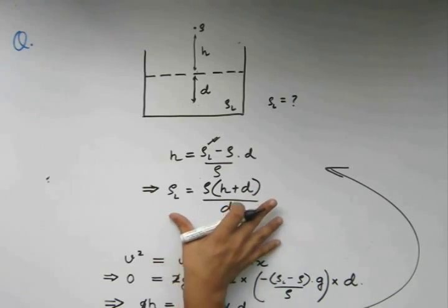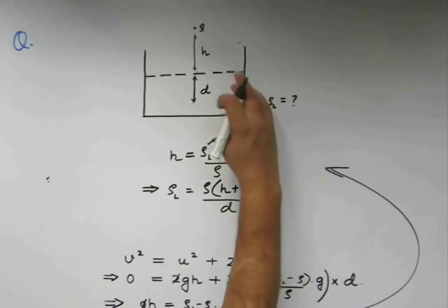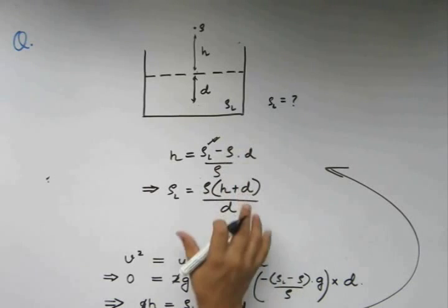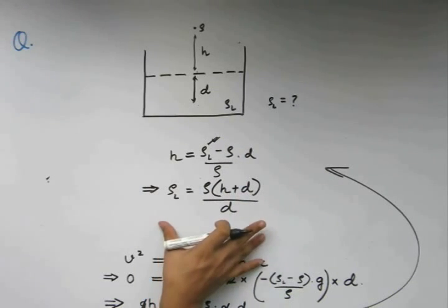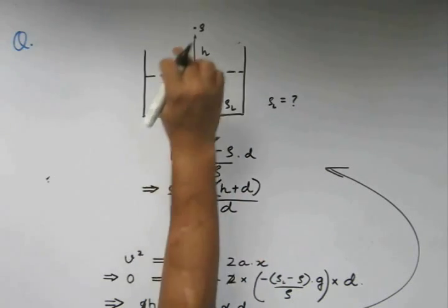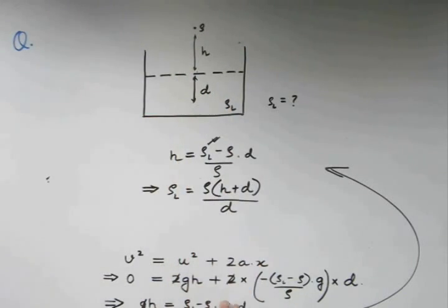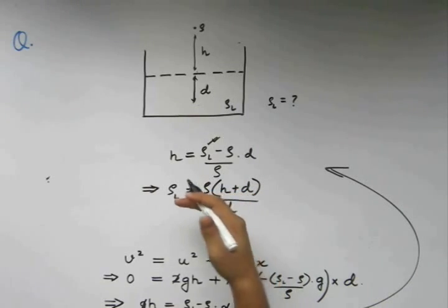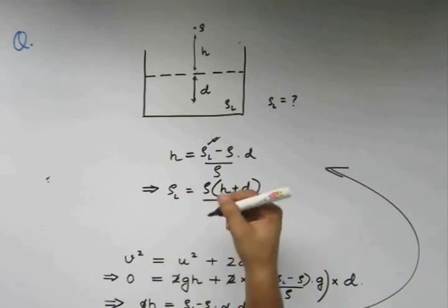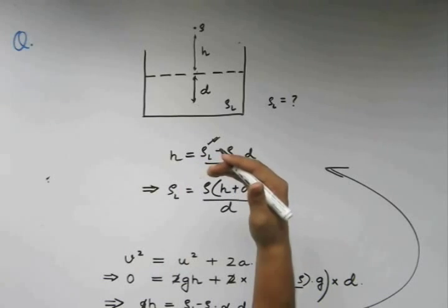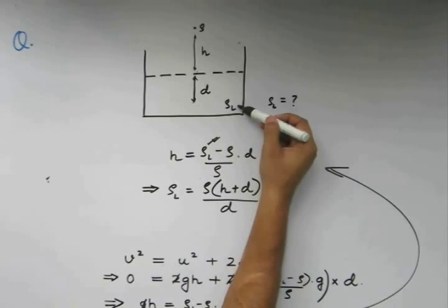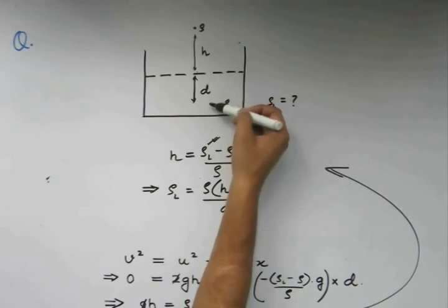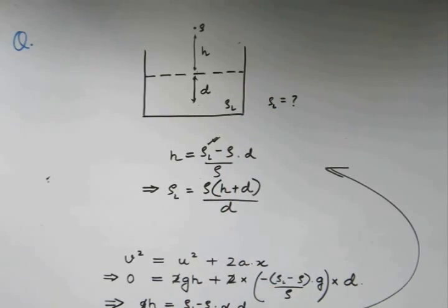This is the definition of this fluid which is present here of density rho l. Note that this density will ensure that this point mass reaches a maximum depth of d. It can also be stated in the reverse way. What I mean to say is the problem can also be stated in the reverse way. You will be given this rho l and you will find out the maximum depth the body travels down the liquid.